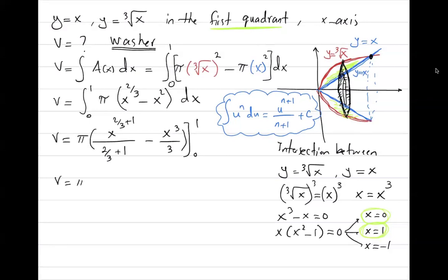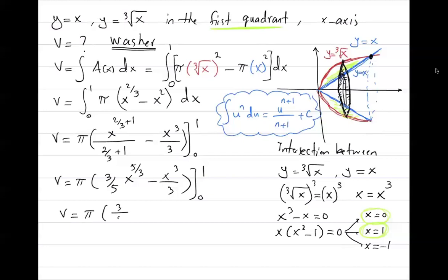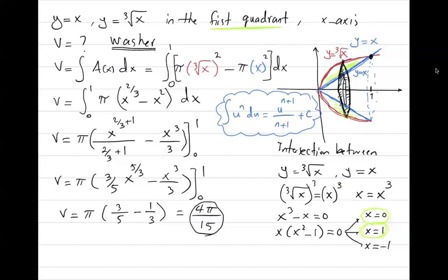Taking the common denominator: (3/5)x^(5/3) minus x³/3, evaluated from 0 to 1. Plugging in 1: 3/5 minus 1/3. Finding the common denominator gives 9/15 minus 5/15, which equals 4/15. So the volume by the washer method is 4π/15.